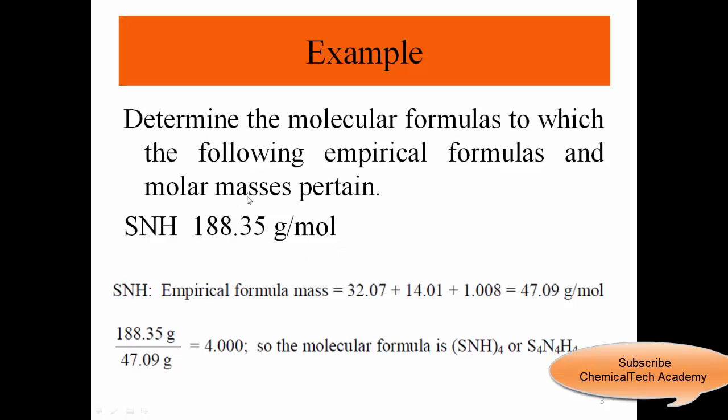So the empirical formula is SNH. The atomic mass of sulfur is 32.07, nitrogen is 14.01, and hydrogen is 1.008. In total we have 47.09 grams per mole. If we divide molar mass by this formula weight, we get the ratio: 188.35 divided by 47.09 gives us 4. So the molecular formula is SNH times 4, or S4N4H4.